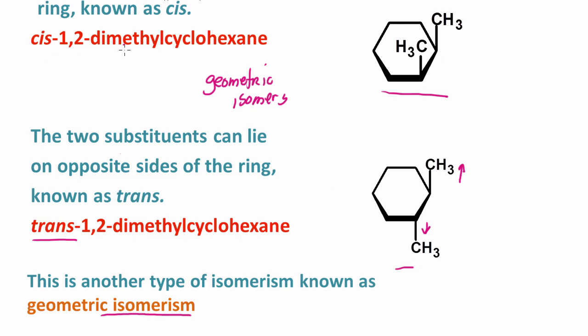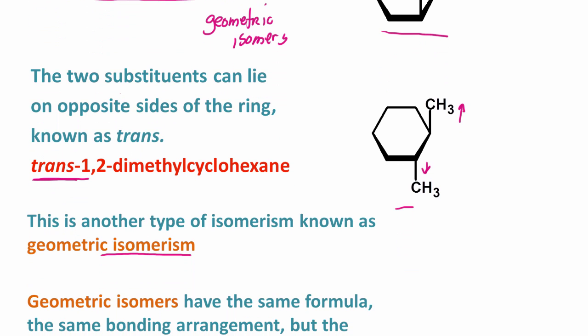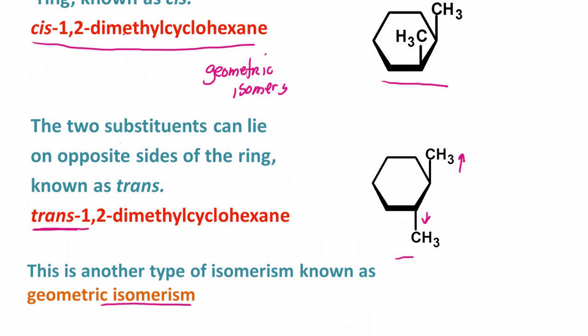In this case, both are on the same side of the ring. In this case, on opposite sides. This compound is called cis-1,2-dimethylcyclohexane. This case is trans-1,2-dimethylcyclohexane.